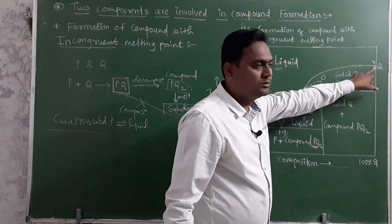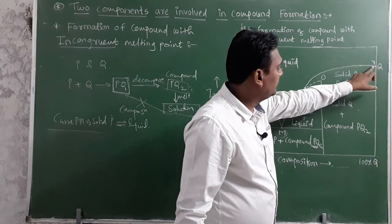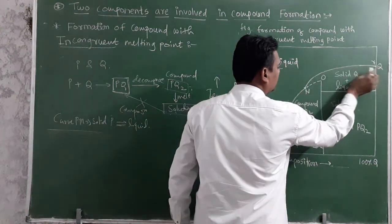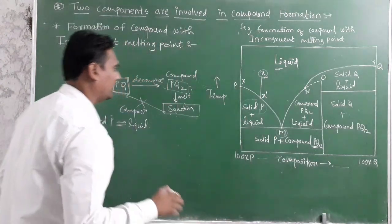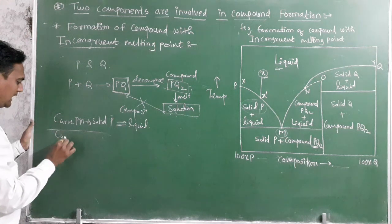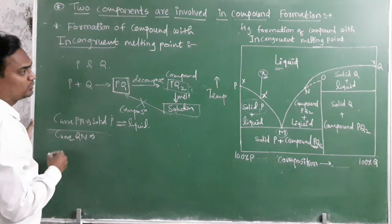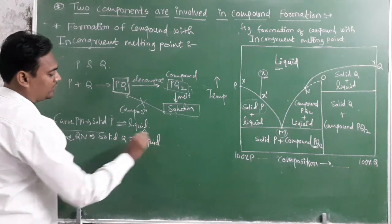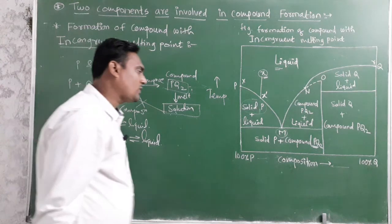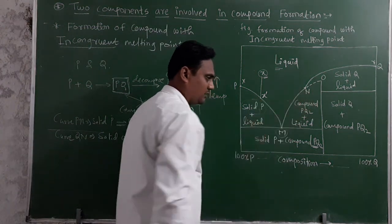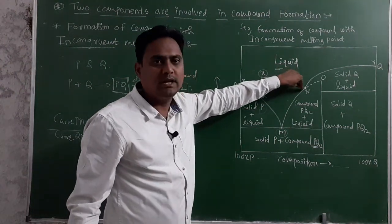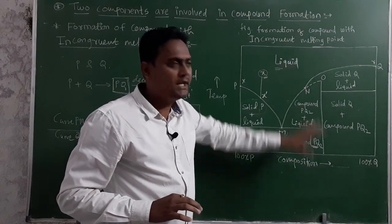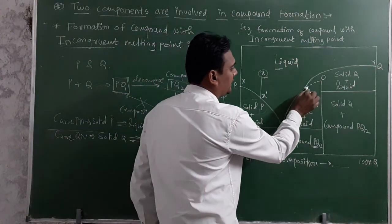Point Q is the melting point of component Q. Along curve QN, component Q starts to solidify and forms an equilibrium between solid Q and liquid. So along curve QN, solid Q is in equilibrium with liquid. The curve NM is also important — at point N, the solid intermediate undergoes decomposition.